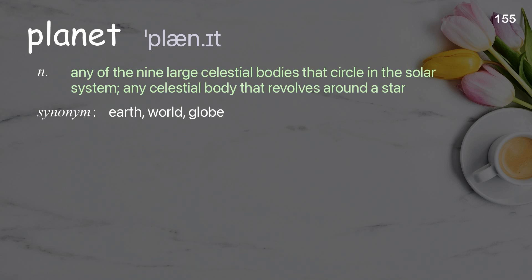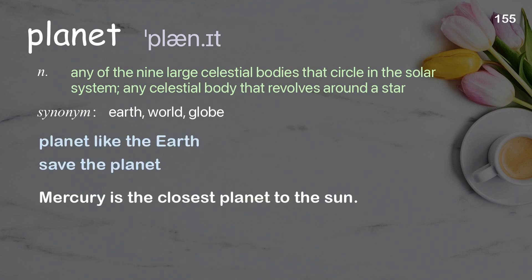Planet: any of the nine large celestial bodies that circle in the solar system; any celestial body that revolves around a star. Examples: planet like the Earth, save the planet. Mercury is the closest planet to the sun.